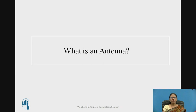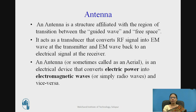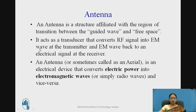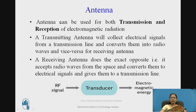Let us first see what is an antenna. An antenna is a structure affiliated with the region of transition between the guided wave and free space wave. It acts as a transducer that converts the RF signal to an electromagnetic wave. An antenna can be used for both transmission and reception of electromagnetic radiation.